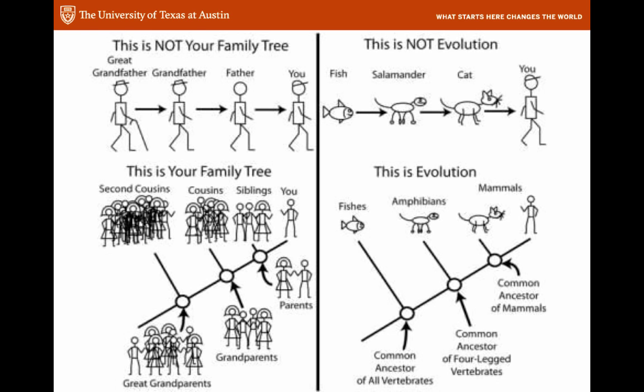Let's clear up one major misconception. There is this idea among people that evolution is kind of a straight-line thing — people worry about whether we've descended from monkeys. But that's not the case. Evolution is a branching off from a common ancestor in different directions based on different adaptations in different environments. It's much more like a tree than a straight line.